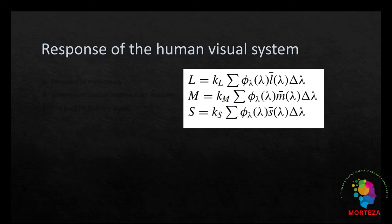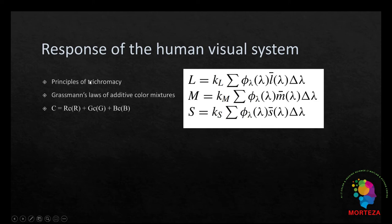Therefore, a system of colorimetry was built based on the principles of trichromacy and Grassmann's law of additive color mixture. The concept of this system is that color matches can be specified in terms of the amounts of three additive primaries required to visually match a stimulus.